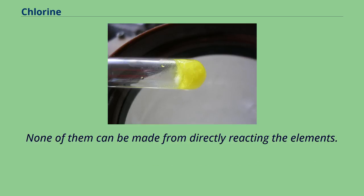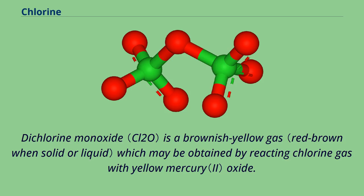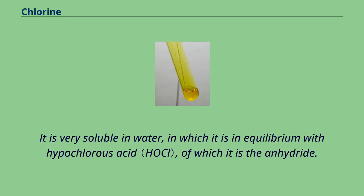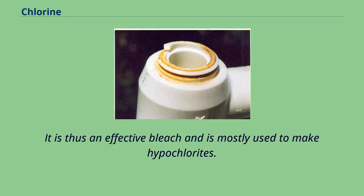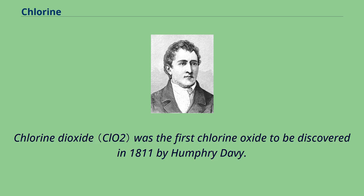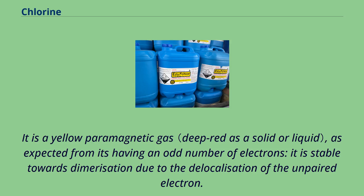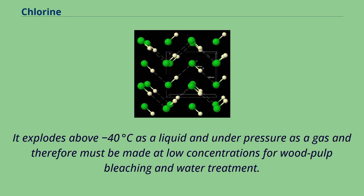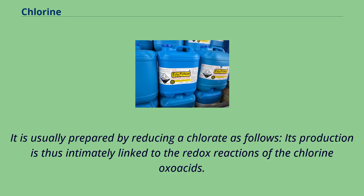Dichlorine monoxide is a brownish yellow gas which may be obtained by reacting chlorine gas with yellow mercury oxide. It is very soluble in water, in which it is in equilibrium with hypochlorous acid, of which it is the anhydride. It is thus an effective bleach and is mostly used to make hypochlorites. It explodes on heating or sparking or in the presence of ammonia gas. Chlorine dioxide was the first chlorine oxide to be discovered in 1811 by Humphrey Davy. It is a yellow paramagnetic gas; it is stable towards dimerization due to the delocalization of the unpaired electron. It explodes above −40°C as a liquid and under pressure as a gas, and therefore must be made at low concentrations for wood pulp bleaching and water treatment. It is usually prepared by reducing a chlorate, its production thus intimately linked to the redox reactions of the chlorine oxoacids.